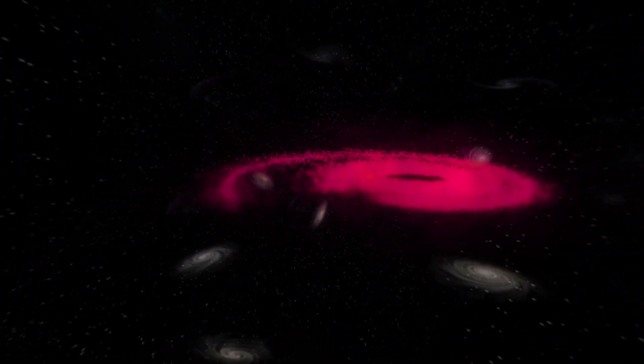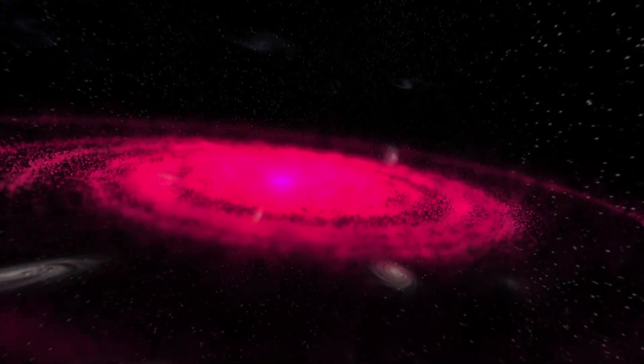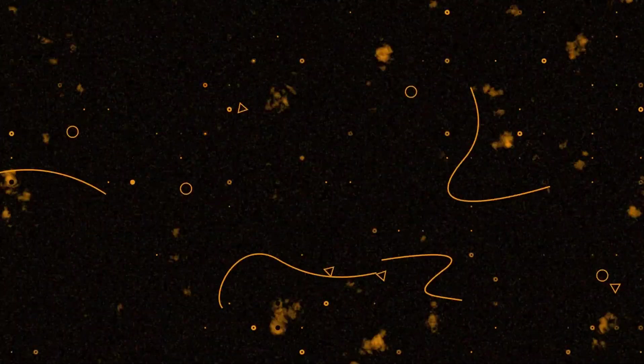However, the denser star centers, where stars live and die rapidly, are equally dangerous because frequent supernovae irradiate the surrounding area. According to new research, it is likely that the inner boundary of the galactic habitable zone is located farther away from the galaxy's core than previously thought.